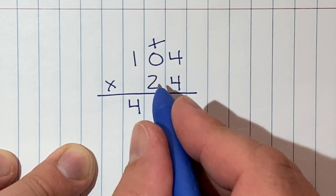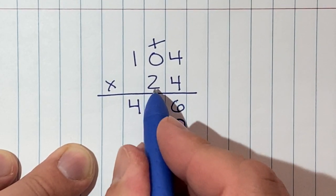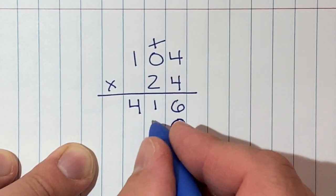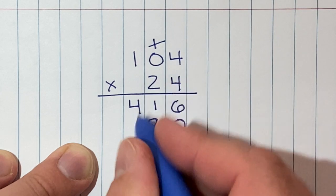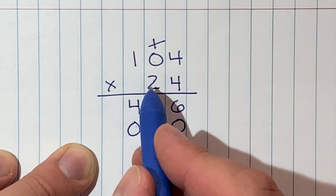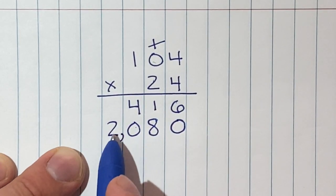Because of that, we've already used this one, so I'm going to cross it off. Because this two is really a 20, I'm going to put a zero here, and that's going to give the two the power of 20. Two times four is eight, two times zero is zero—notice how I didn't skip it—and then two times one is two. My second partial product is 2080.